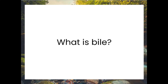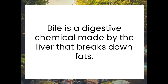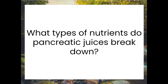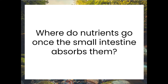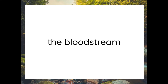What is bile? Bile is a digestive chemical made by the liver that breaks down fats. What types of nutrients do pancreatic juices break down? Pancreatic juices break down carbohydrates, fats, and proteins. Where do nutrients go once the small intestine absorbs them? The bloodstream.